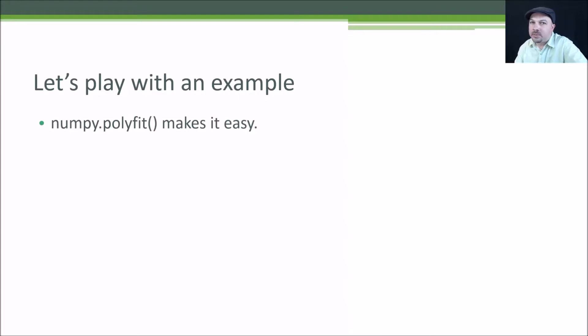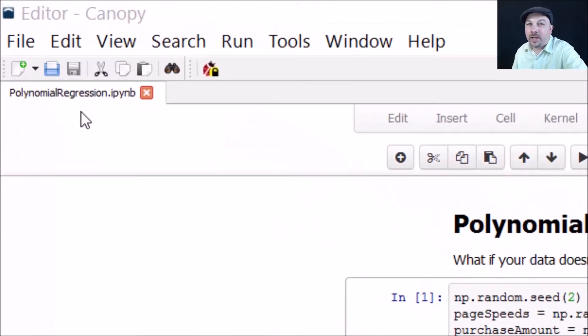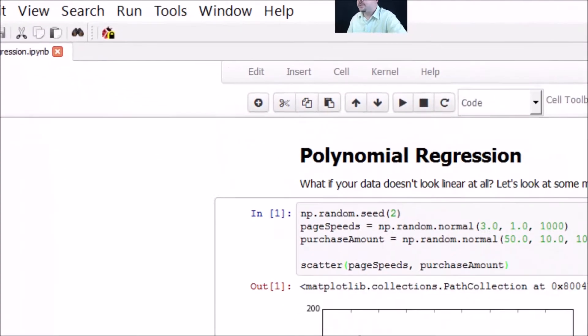This will make more sense when we do an example. Fortunately NumPy has a polyfit function that makes it super easy to play with this and experiment with different results. Let's go take a look. Time for fun with polynomial regression. I really do think it's fun by the way. It's kind of cool seeing all that high school math actually coming into some practical application. Go ahead and open the polynomial regression IPython notebook and let's have some fun.